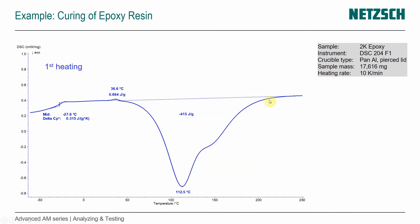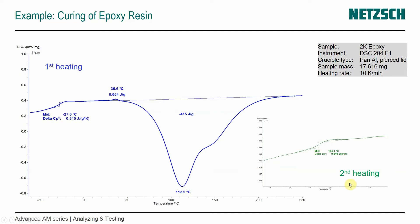That exothermal process leads to the cure of this material. And then when we cool it down and have a second heating, we actually only see a glass transition temperature, and that glass transition temperature is at significantly higher temperatures than the glass transition of the liquid components. That's also an indication that it's cured, and that new network that is irreversibly built has a higher glass transition temperature, which means that cured material has a higher thermal stability.